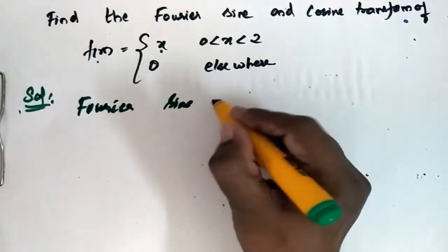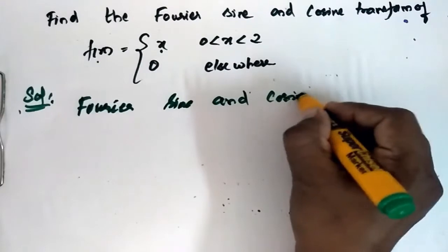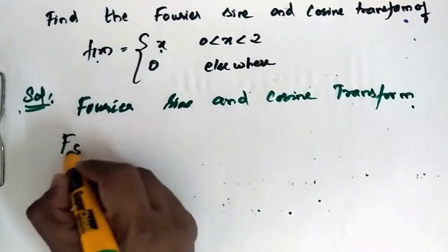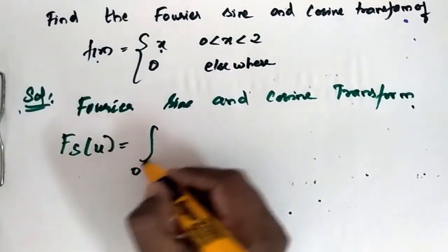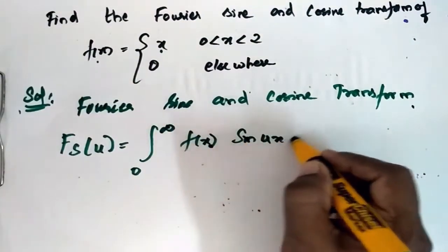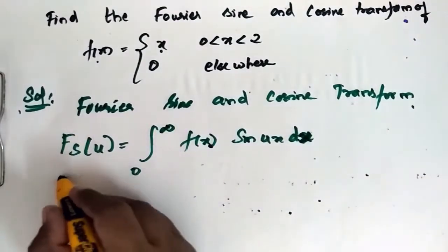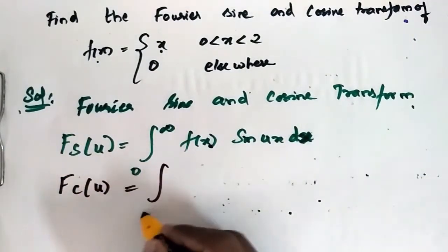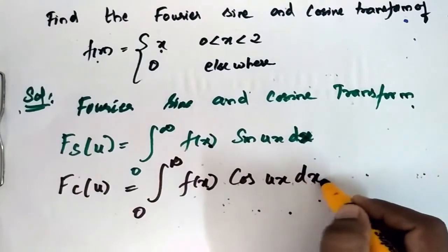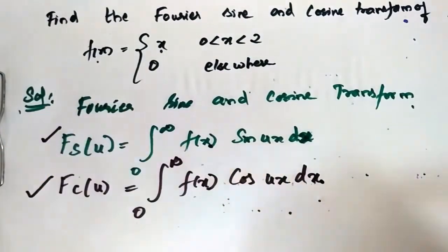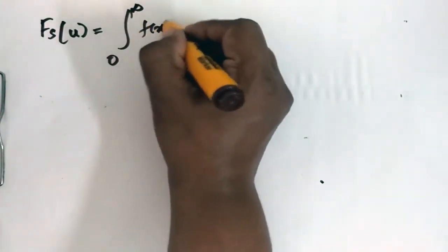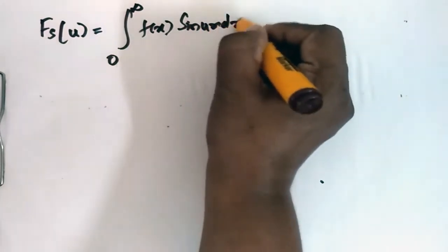Fourier sine and cosine transform definitions: fs(u) is equal to the integral from 0 to infinity of f(x) sine(ux) dx, and fc(u) is equal to the integral from 0 to infinity of f(x) cos(ux) dx.